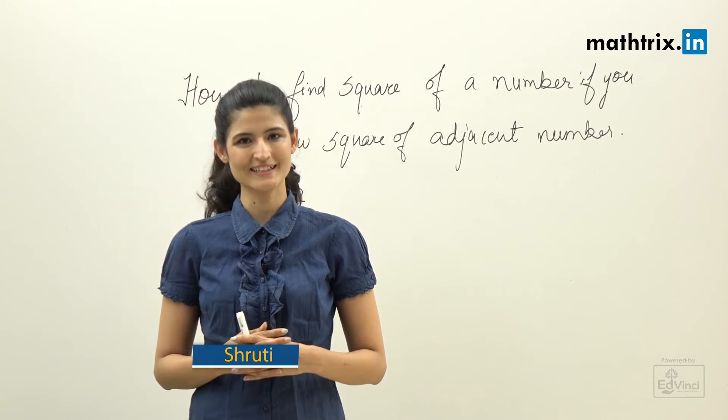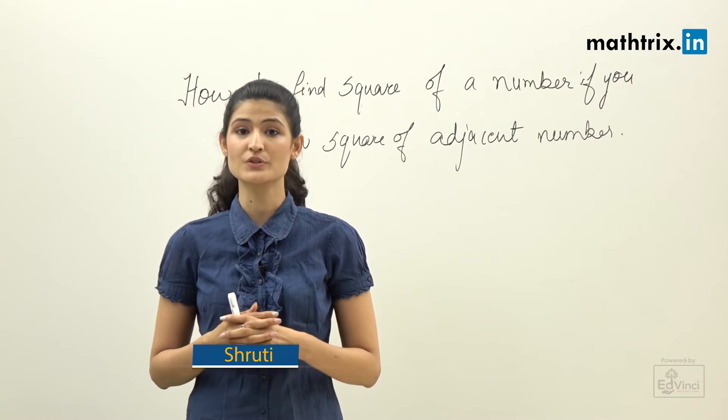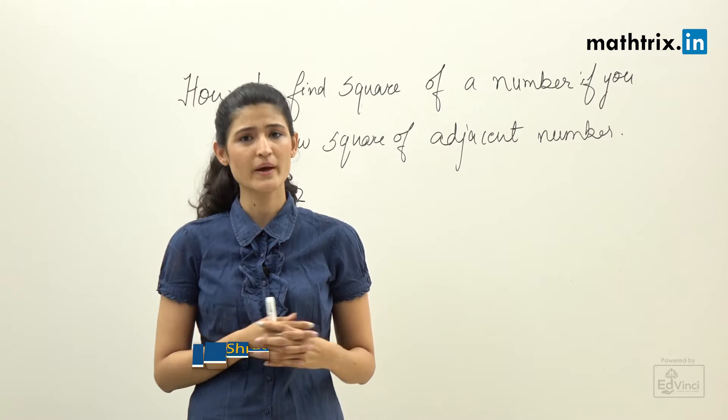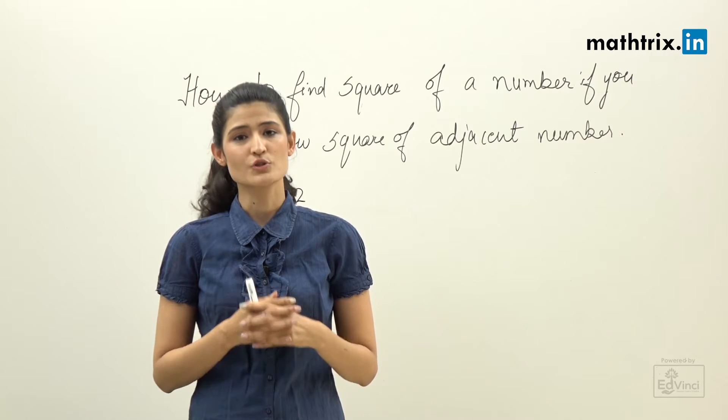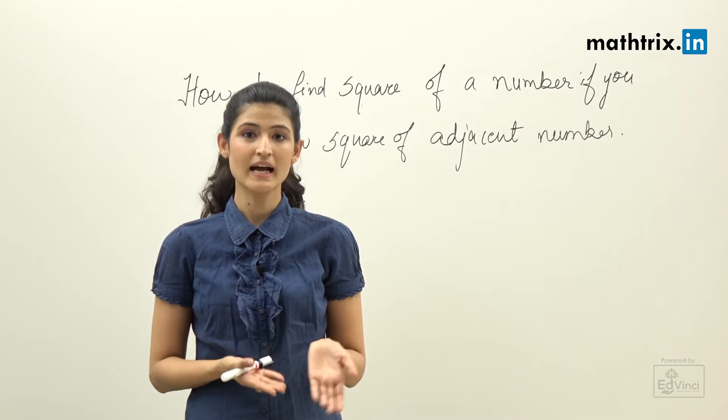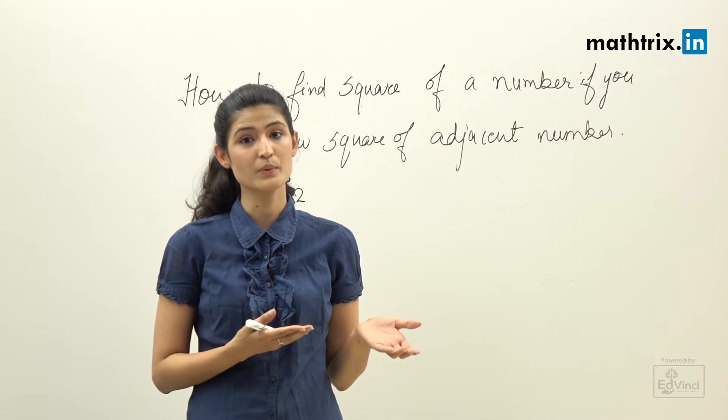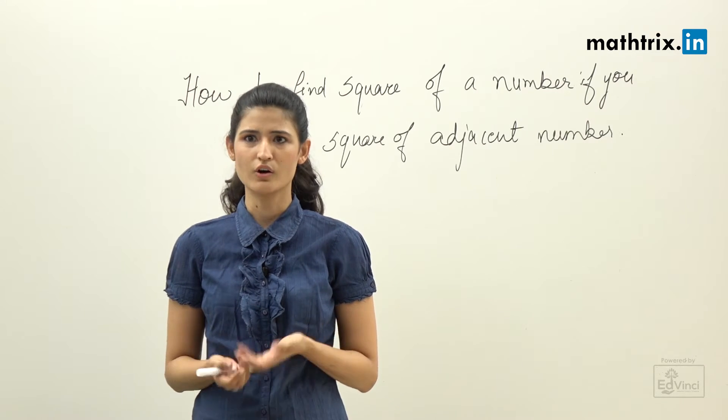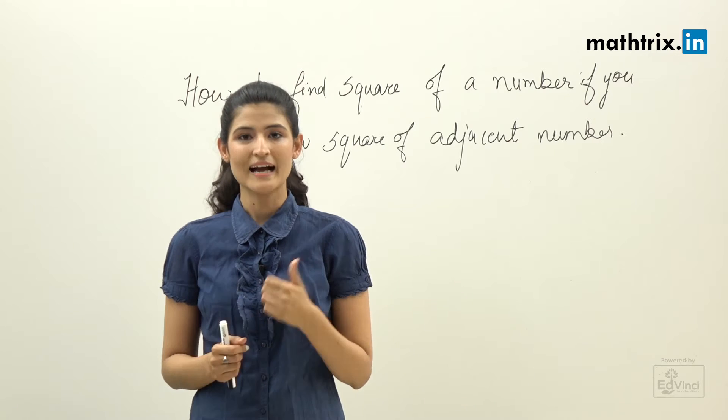Hello friends, welcome to speed math classes. In this episode, I'm going to tell you how to find square of a number if you know square of the adjacent number. For example, if you know square of 40, I can tell you how to find 41 square and 39 square. Or if you know square of 75, I'll tell you how to find square of 74 and 76.